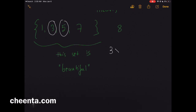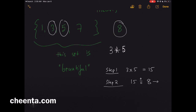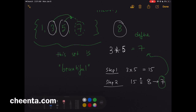I'll call that method star. So if you do 3 star 5: in step one you multiply 3 and 5, that's 15; in step two you divide 15 by 8 and look at the remainder, which is 7. So we define 3 star 5 as 7. Let's try this one more time — let's combine 5 and 7 using this new rule.